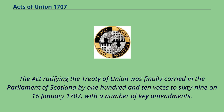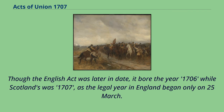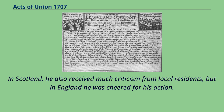News of the ratification and of the amendments was received in Westminster, where the Act was passed quickly through both houses and received the Royal Assent on 6 March. Though the English Act was later in date, it bore the year 1706 while Scotland's was 1707, as the legal year in England began only on 25 March. The Duke of Queensbury was largely responsible for the successful passage of the Union Act by the Parliament of Scotland; he received much criticism from local residents in Scotland, but in England he was cheered for his action.